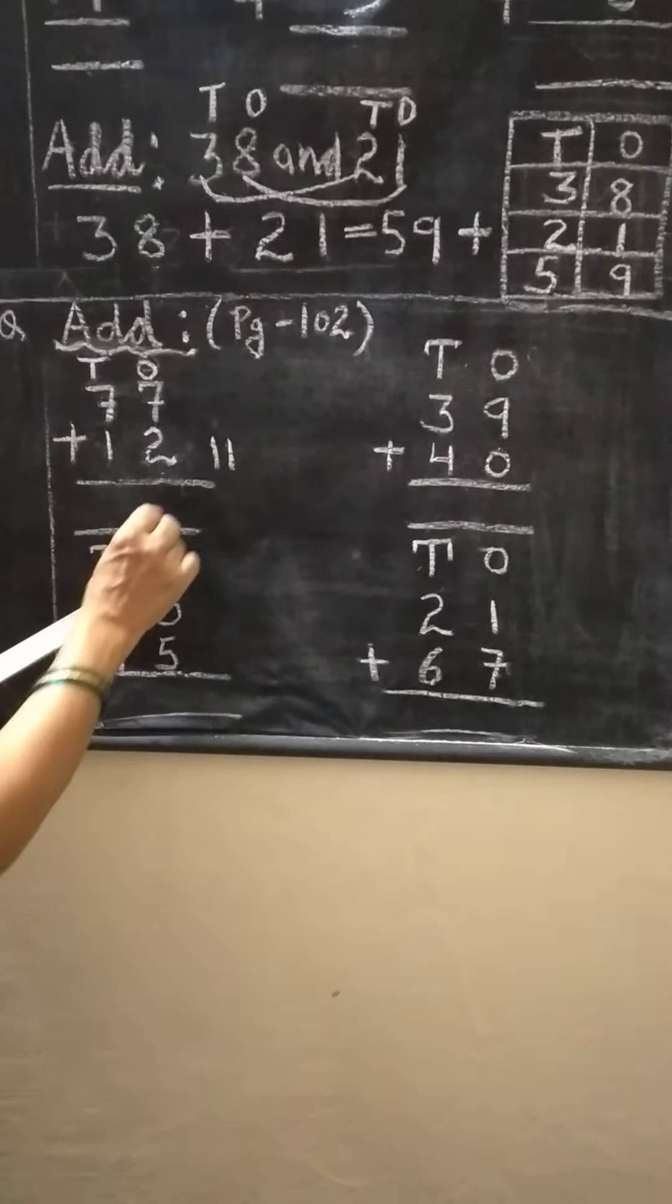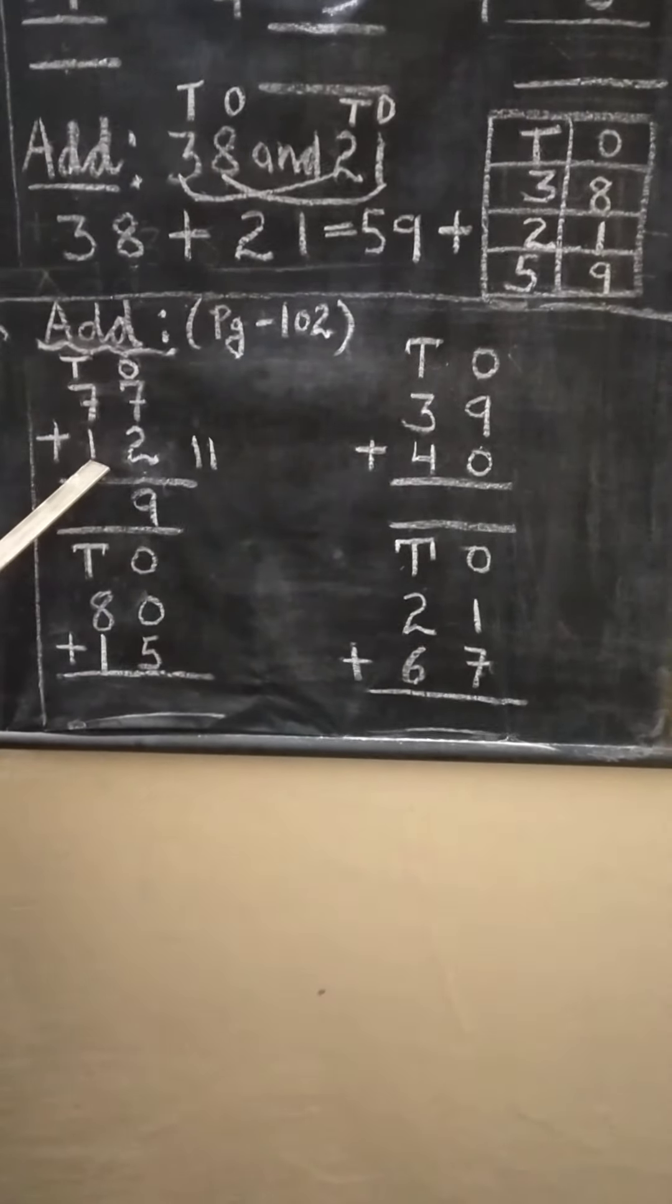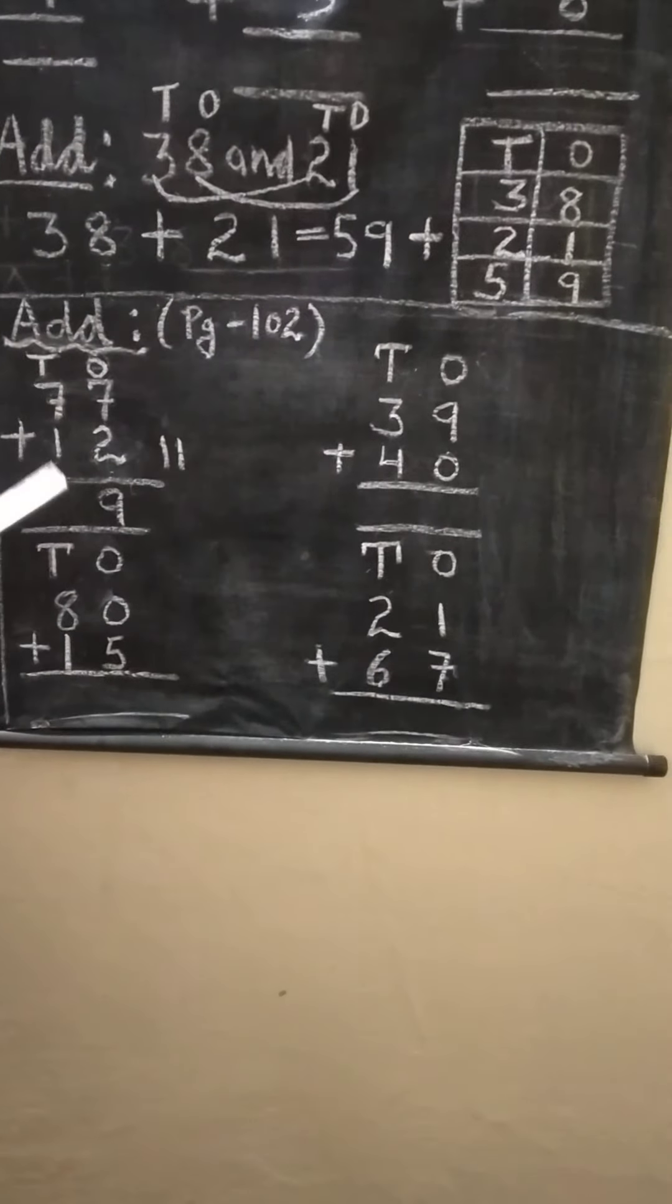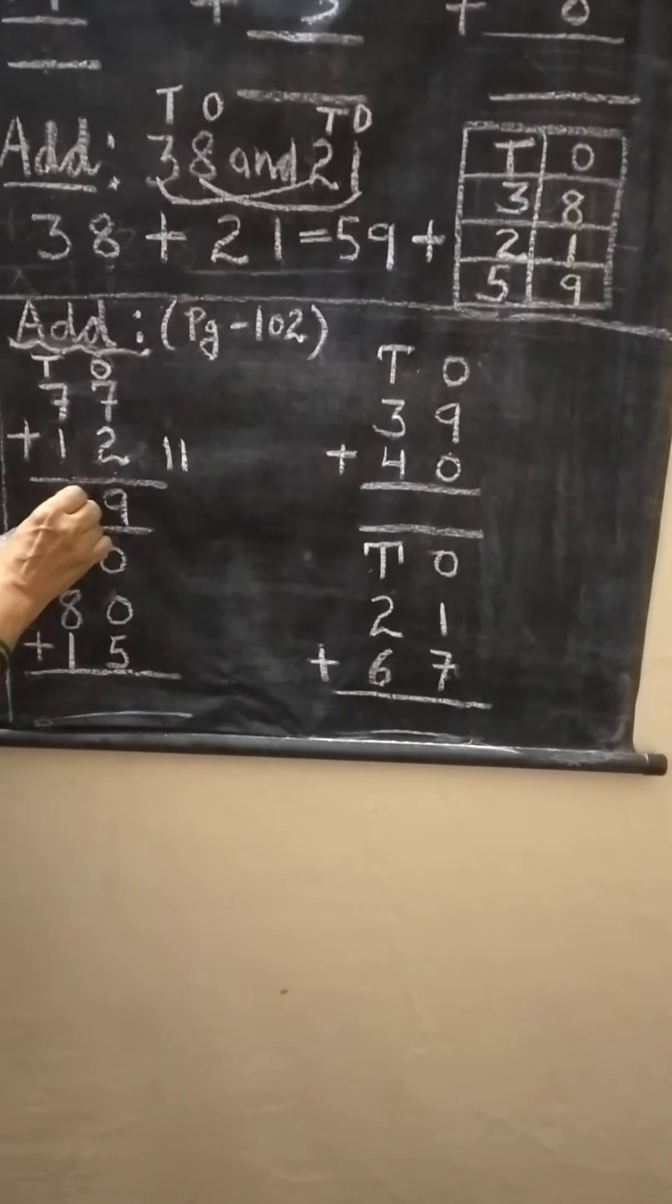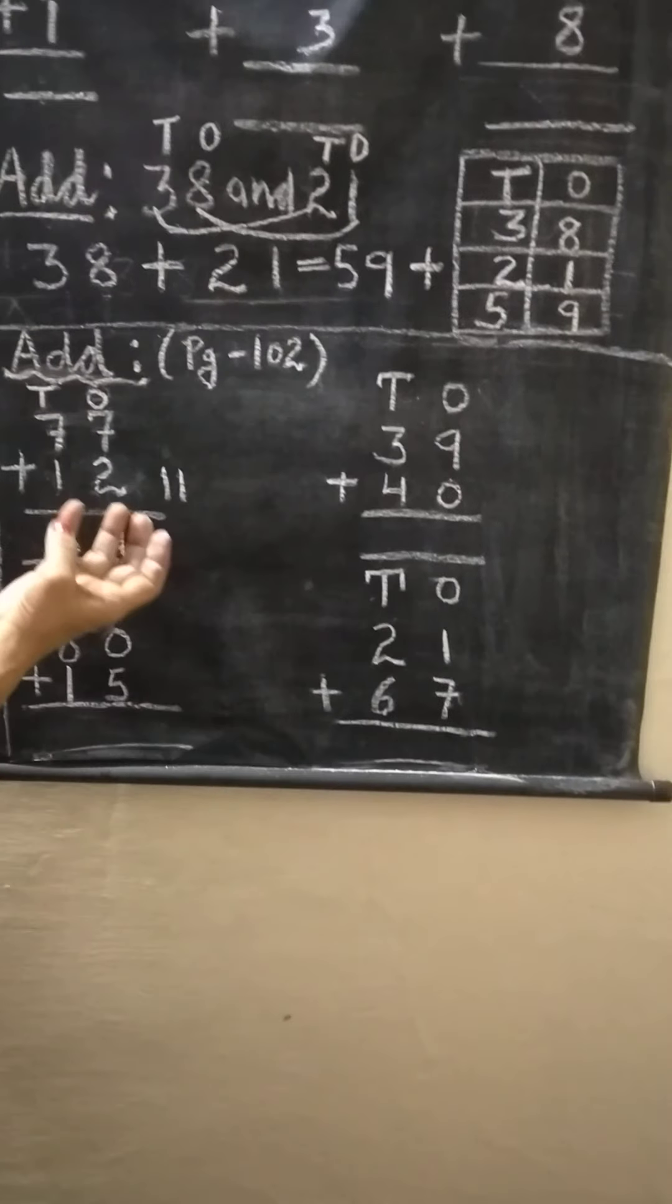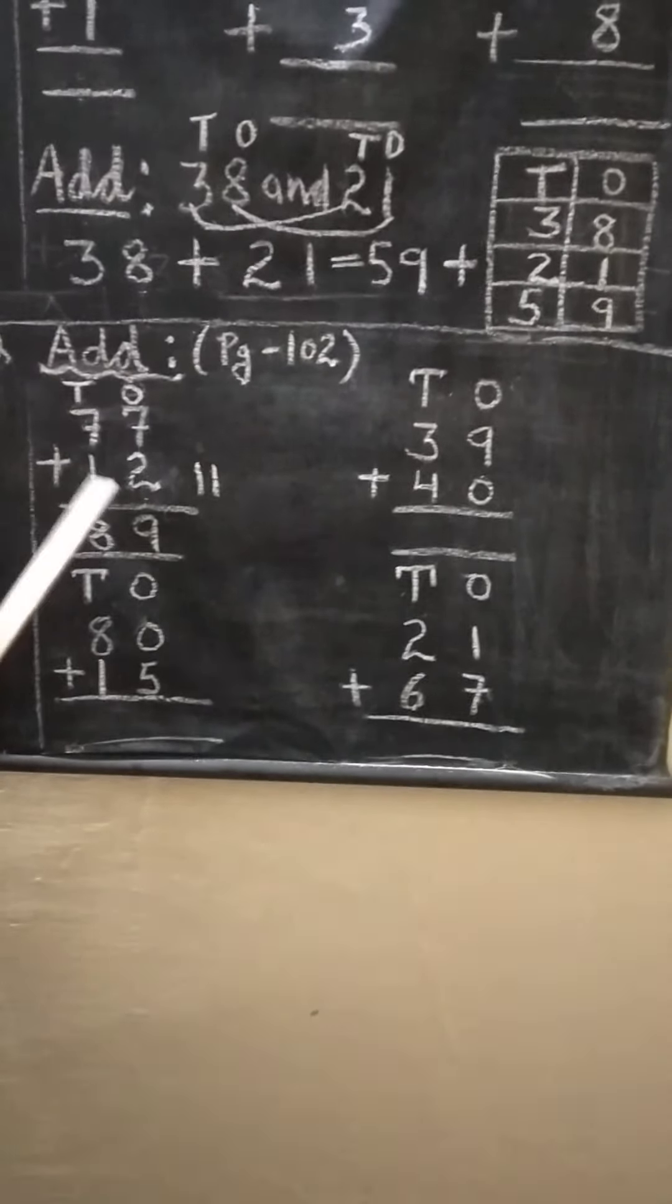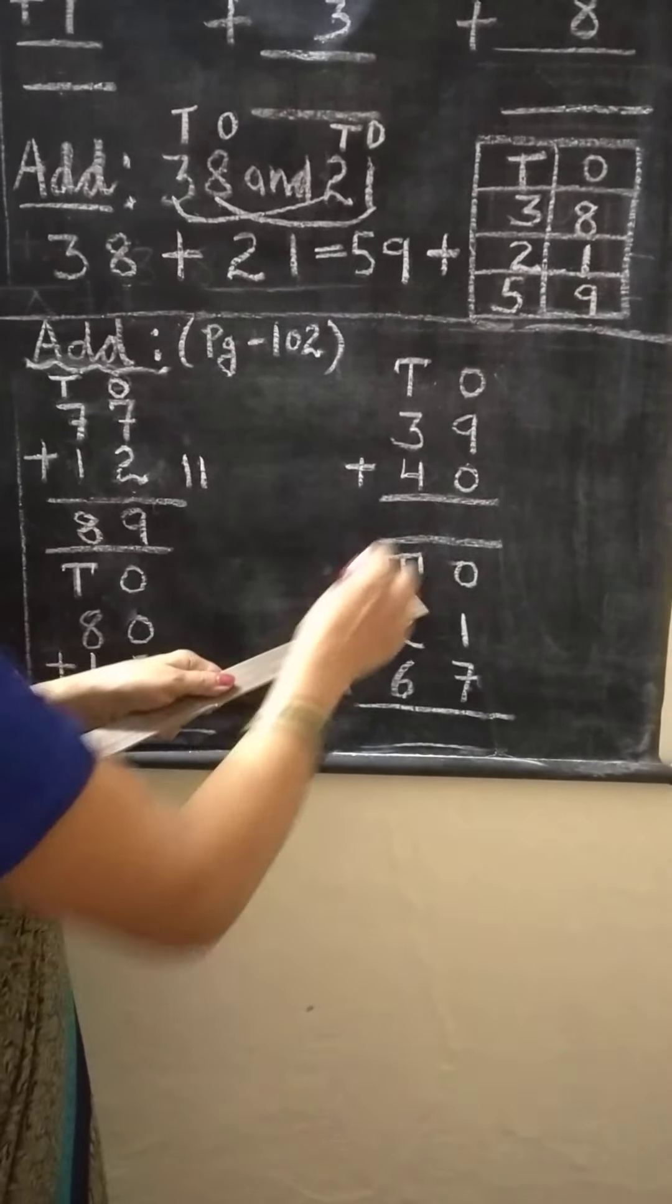7 plus 1, when 1 is there, there is no need to draw the lines. You can write the direct answer. 7 plus 1 is 8. You can also count on the fingers. 7, one, two, after 7 is 8, 9, by using the fingers you can also add.